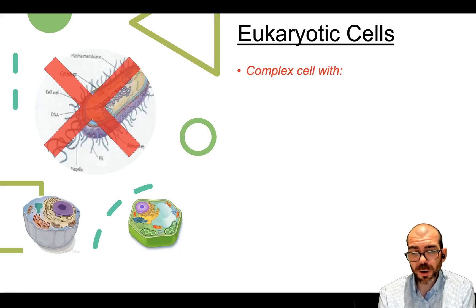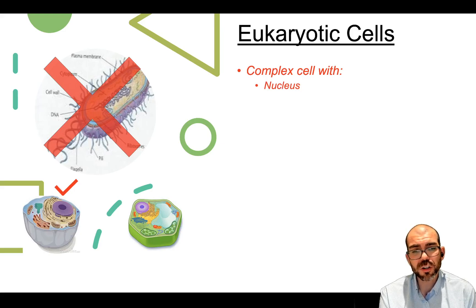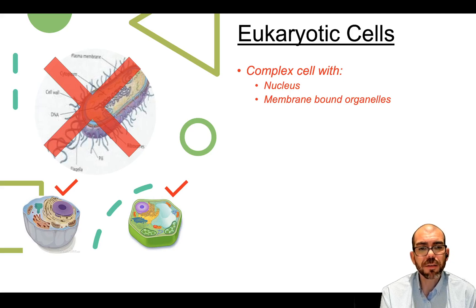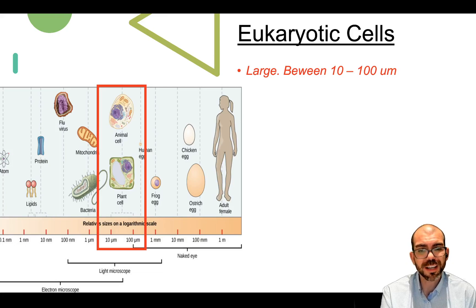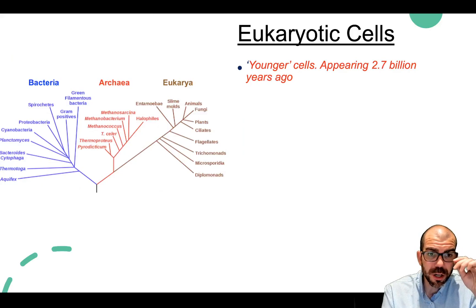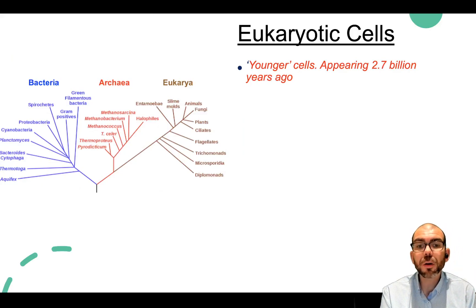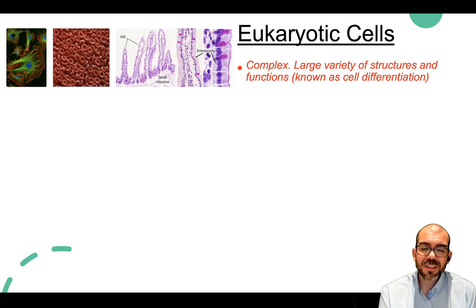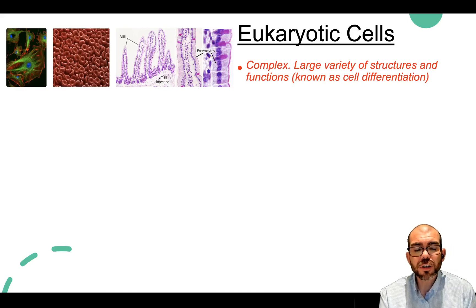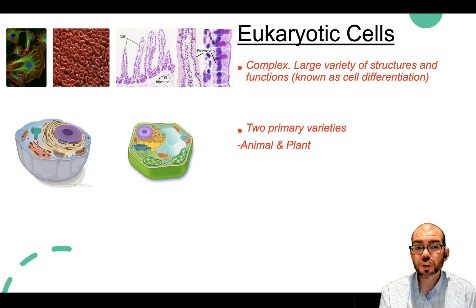Eukaryotic cells are super complex. The two defining characteristics are that they have a nucleus—one of the largest organelles—and they have membrane-bound organelles: little tiny structures made of membrane that do different functions for the cell. They are large, between 10 to 100 micrometers. They appeared about 2.7 billion years ago, a good deal later than prokaryotes. They have a large variety of structures and functions, and the divergence of eukaryotic cells into different shapes and structures is known as cell differentiation. There are two primary varieties: animal and plant.